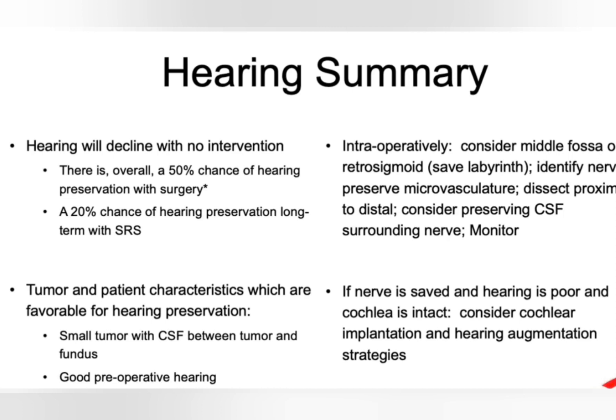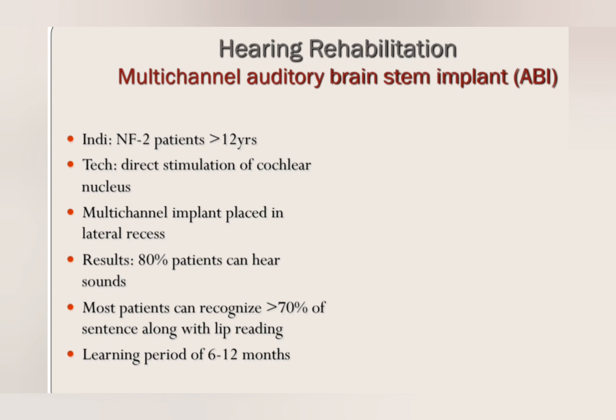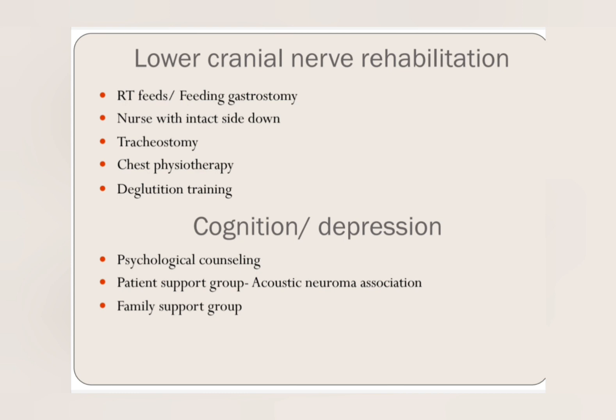If you want to preserve hearing, middle fossa or retrosigmoid approach is used. If the tumour is big and hearing is already non-serviceable, trans-labyrinthine approach is appropriate. If there is neurofibromatosis type 2, non-serviceable hearing, or the cochlear nerve is gone during surgery, brainstem implant is an option — though it is not as good as a cochlear implant and only environmental sounds may be perceived. If lower cranial nerves are also affected, extensive physiotherapy and psychosocial counselling are important to improve the patient's quality of life.